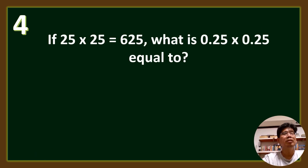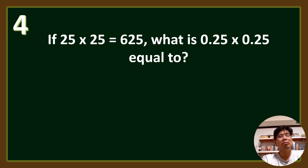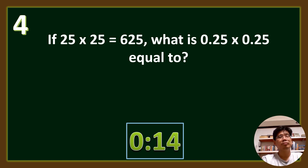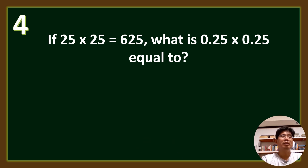Question number 4. If 25 times 25 equals 625, what is 25 hundredths times 25 hundredths equal to? The answer is 625 ten-thousandths, or 0.0625.